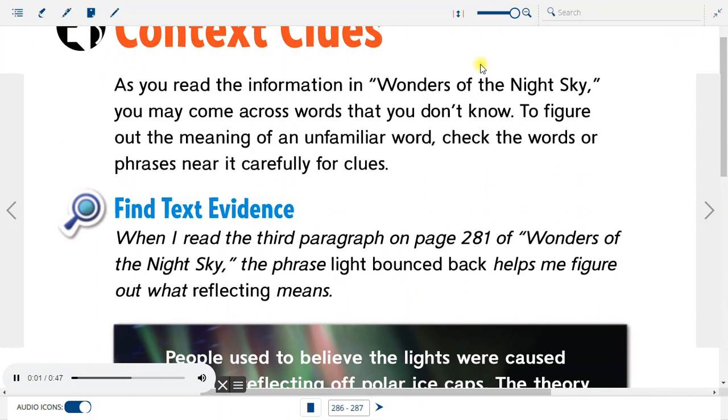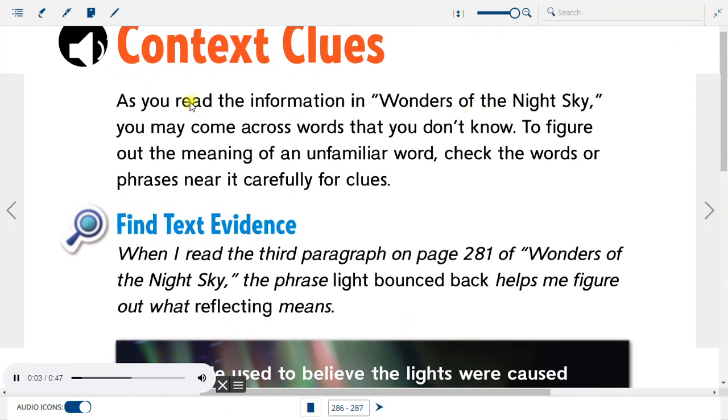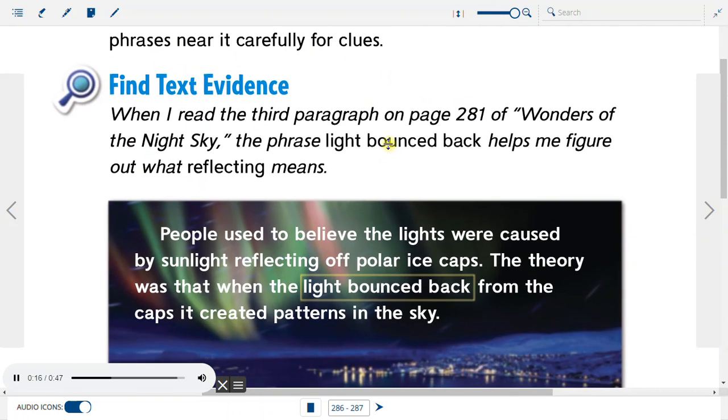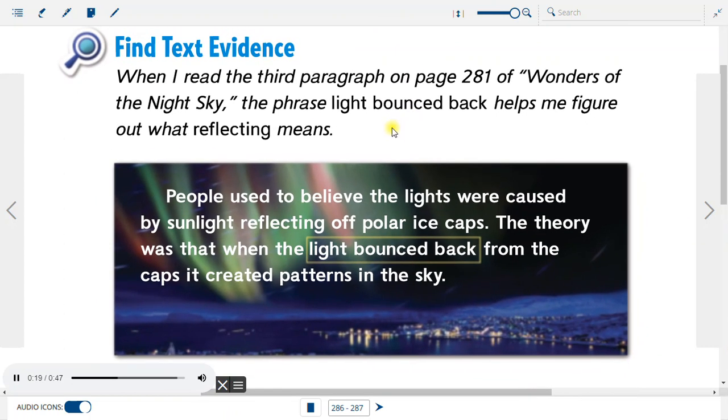Context Clues. As you read the information in Wonders of the Night Sky, you may come across words that you don't know. To figure out the meaning of an unfamiliar word, check the words or phrases near it carefully for clues. When I read the third paragraph on page 281, the phrase 'light bounced back' helps me figure out what reflecting means. People used to believe the lights were caused by sunlight reflecting off polar ice caps.